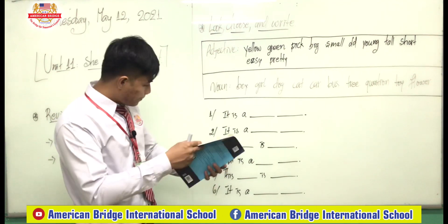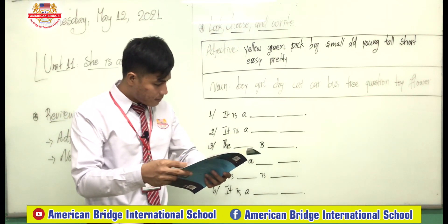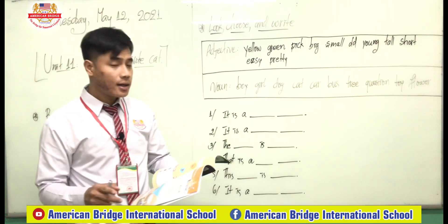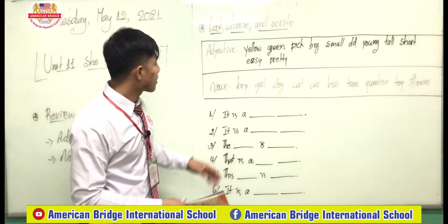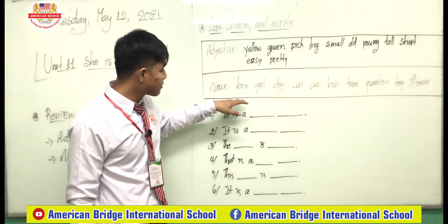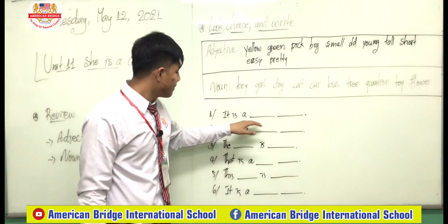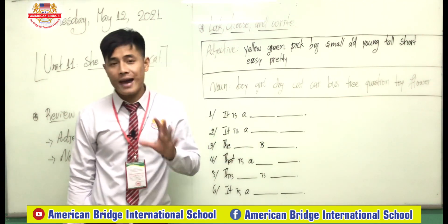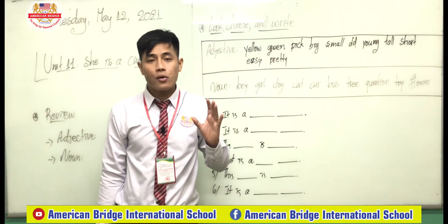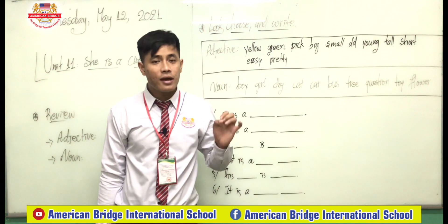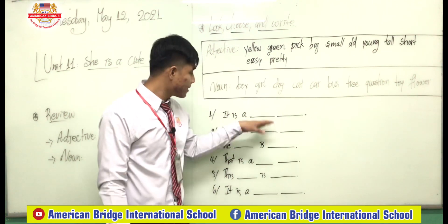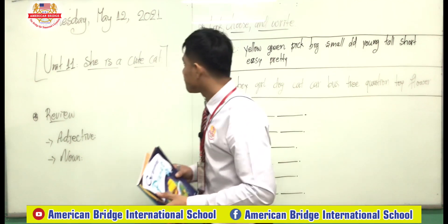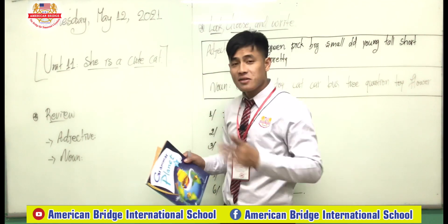Let's call this part one on page 52. What you're going to do is look, choose, and write. Look at these adjectives and look at these nouns as well, and what you have to do is just complete it — write in the blanks. But before you do this, you have to know exactly how to use adjectives and where the location of the adjective is.